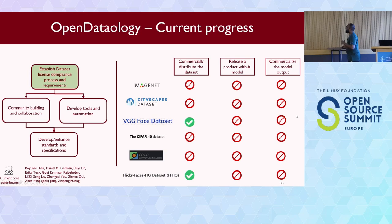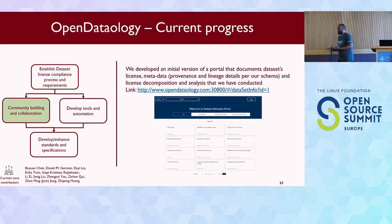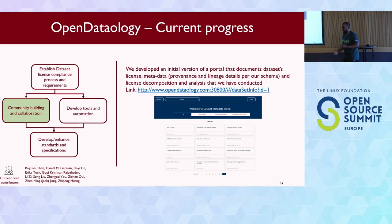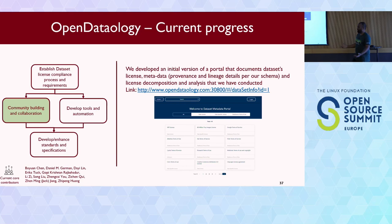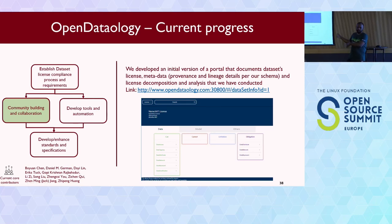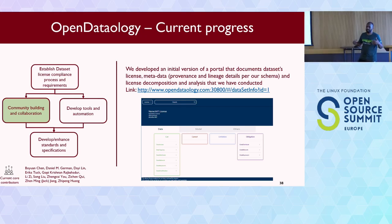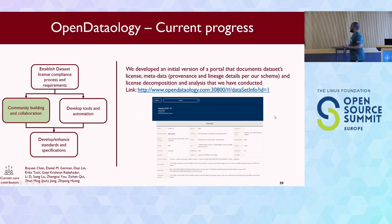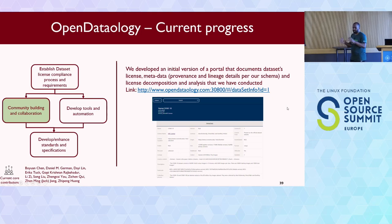To enable community building, we put all the metadata we collected in a portal, along with the final rights and obligations we have analyzed - and it's free. You can look it up and contribute if you do any analysis. We decompose the final findings into: you can do this, you cannot do this, these are the limitations, and these are the obligations. So it's easy to consume and nobody gets confused, hopefully. This is the provenance metadata schema we have developed - all provenance and lineage details of different sources involved in the dataset lifecycle can be captured.